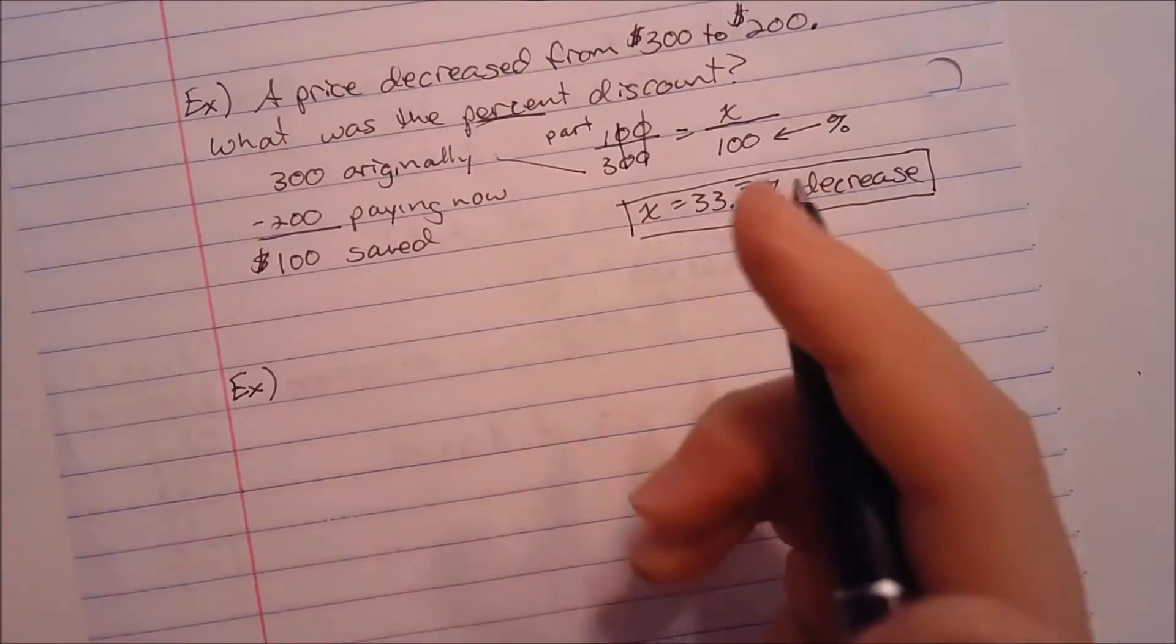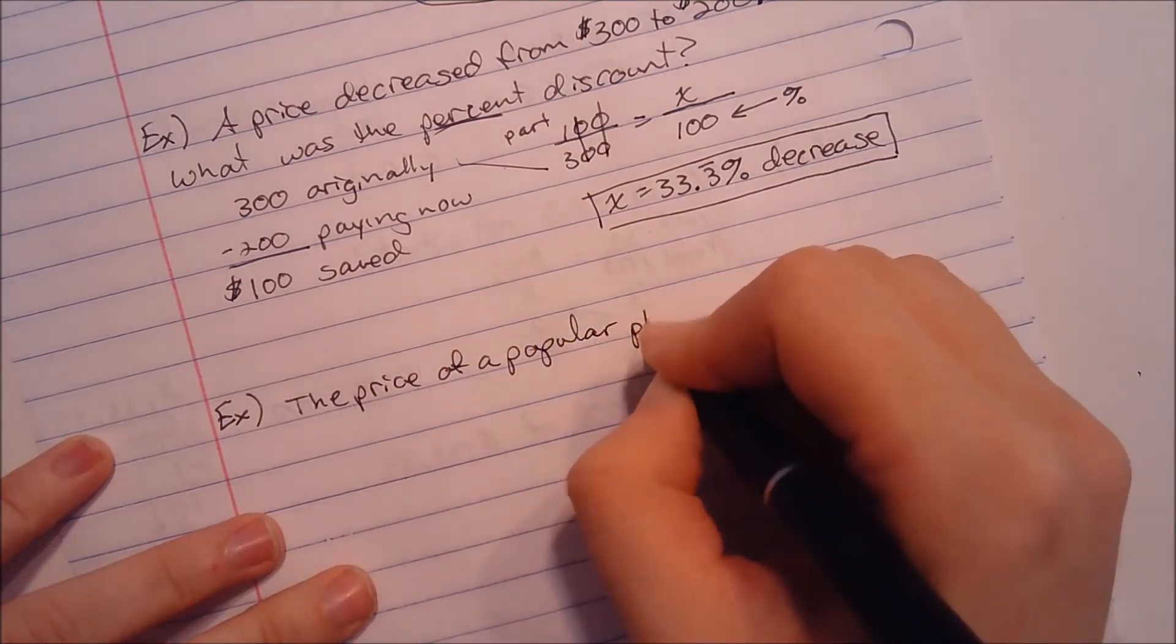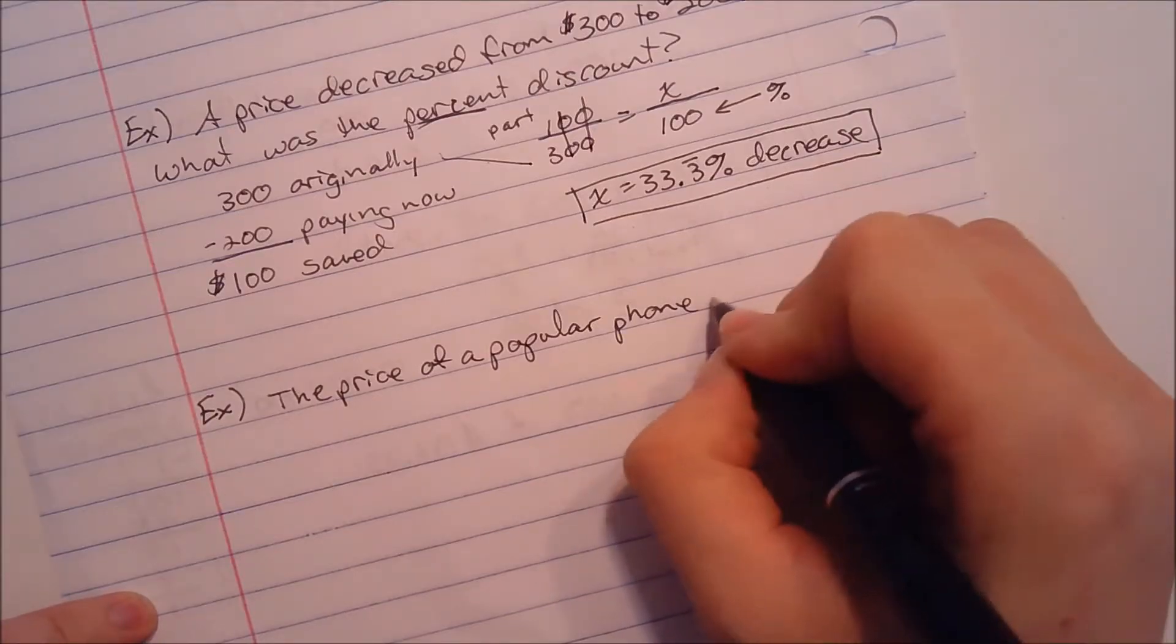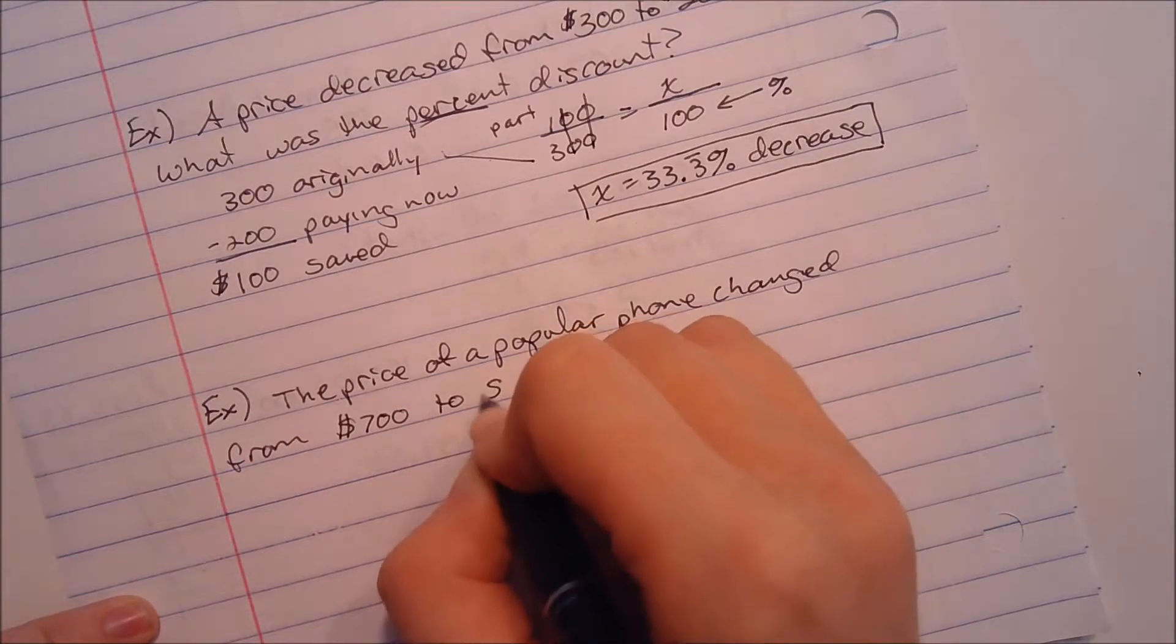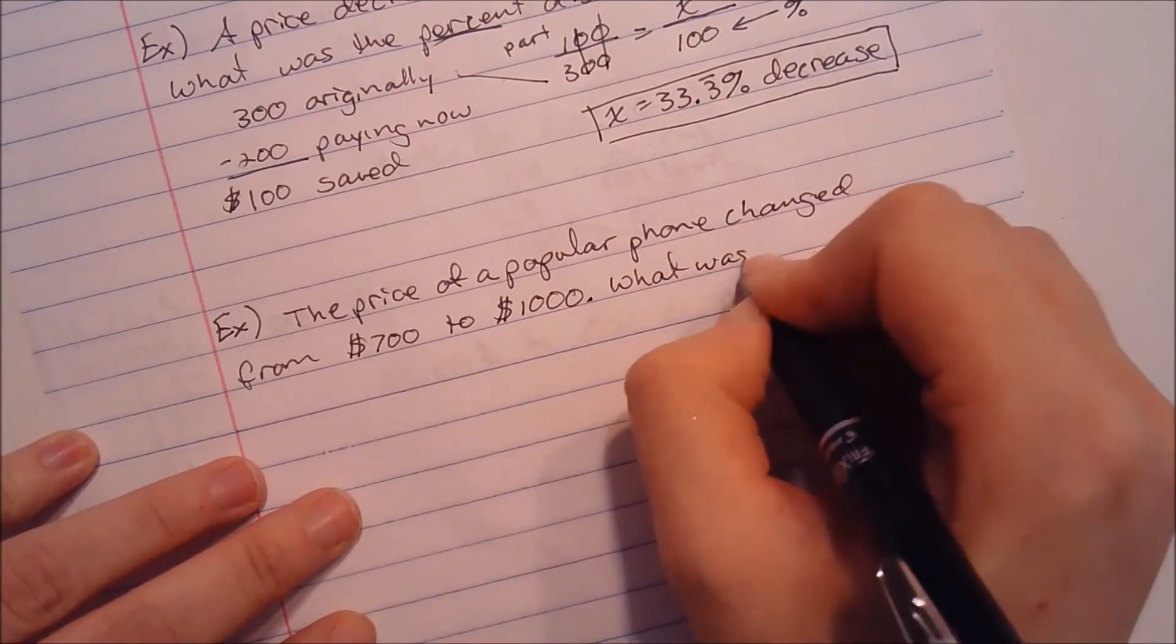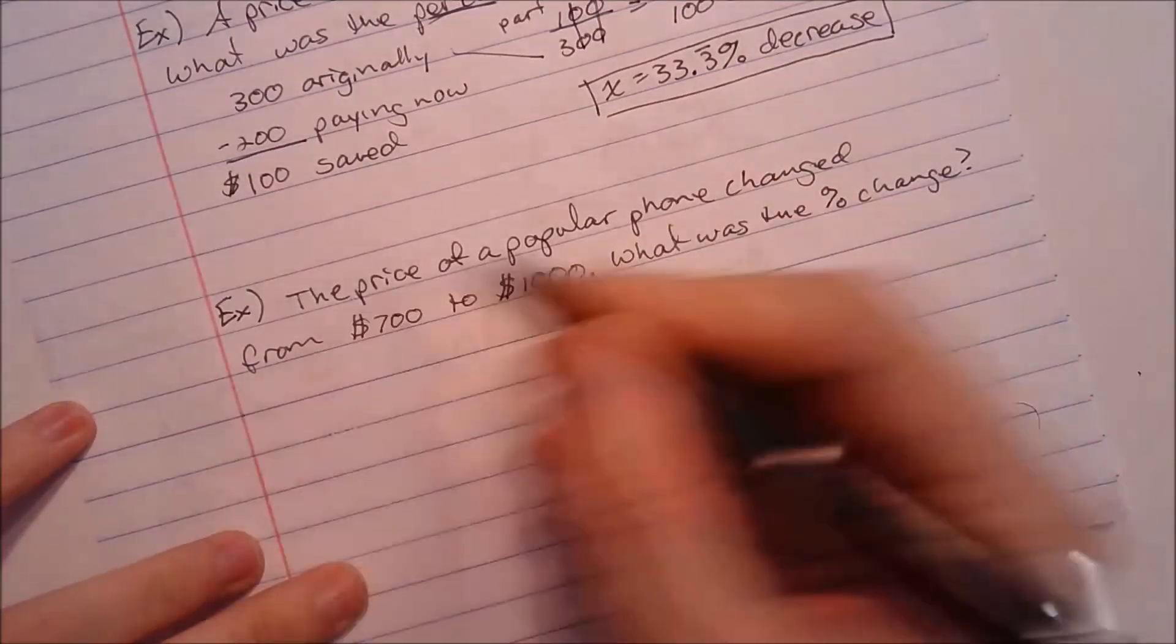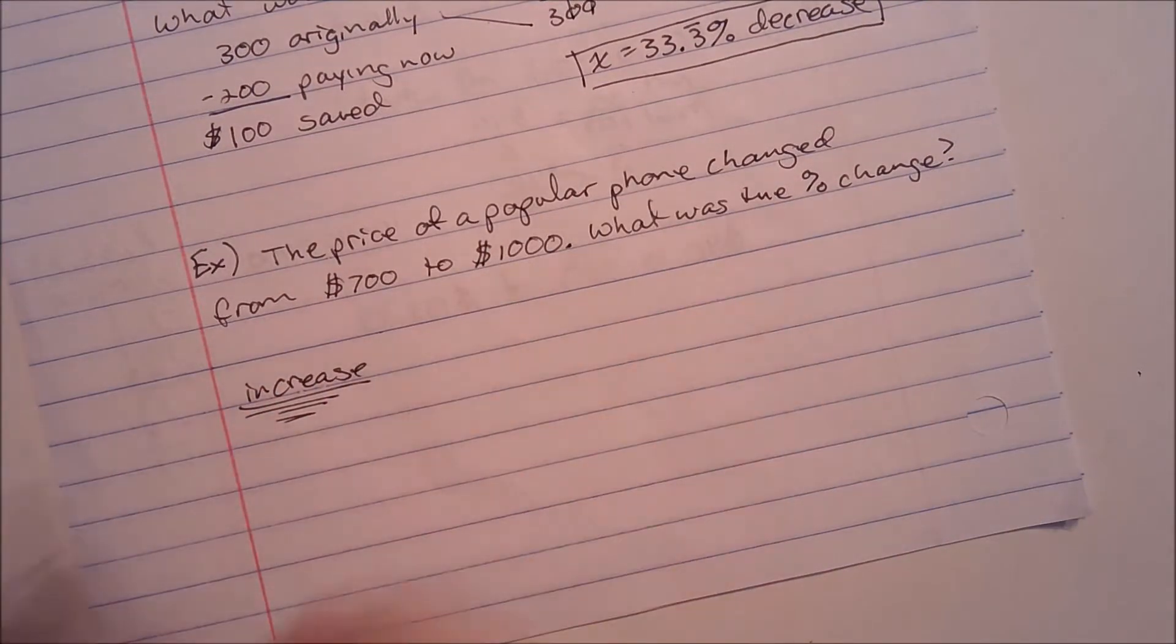Let's check one more. The price of a popular phone. I can't remember how much the iPhone increased when we got that iPhone X. That was like $1,000. What was it before, $700? I'm going to say it was $700, I'm just going to pretend. The price of a popular phone changed from $700 to $1,000. Something like that. What was the percent change? First of all, think to yourself, did it go up or did it go down? Obviously, it went up $700 to $1,000. We know already that it's an increase.